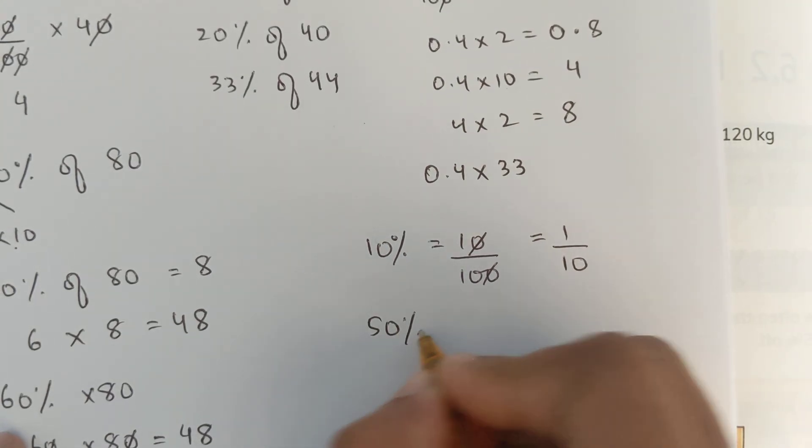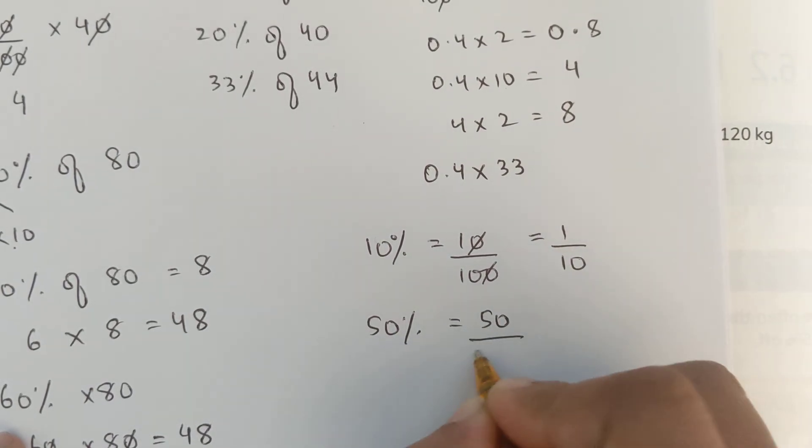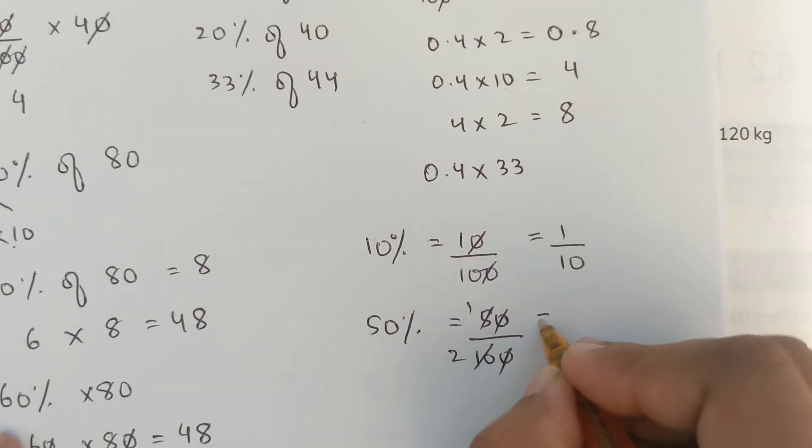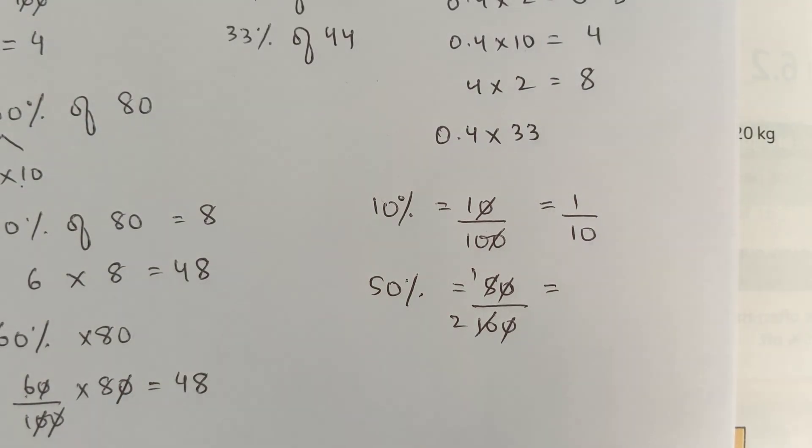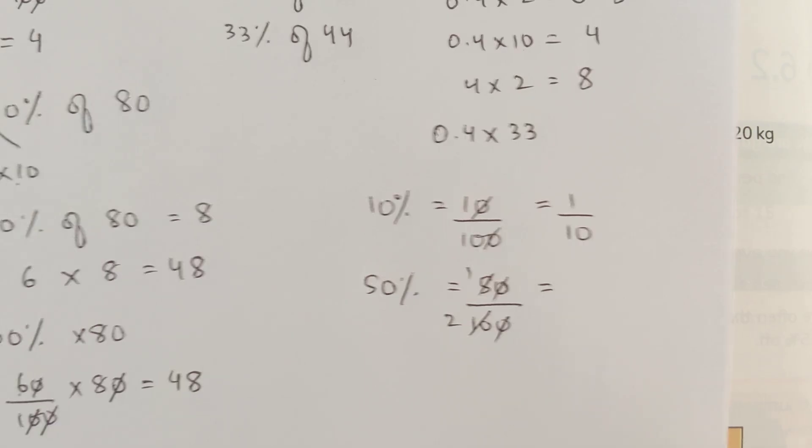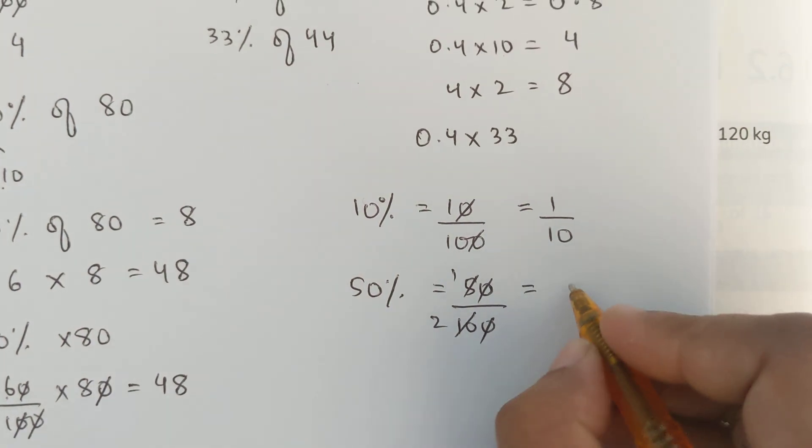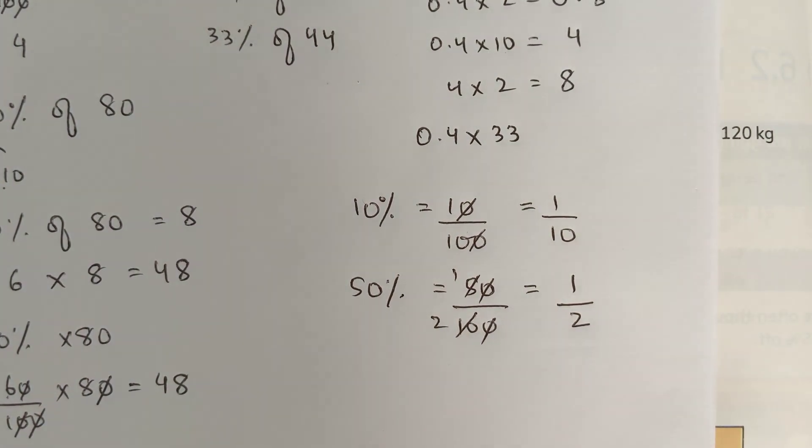Look, 10% means 10 over 100, which is equivalent to 1 over 10. That is why 1 over 10 is dividing something by 10. But, when we talk about 50%, so 50% is 50 over 100. 0 cuts 0. 5 ones are 5. 5 twos are 10. And, as the number suggests, 50%, when we talk about 50%, 50% means half of something because 100% is full. 100% is the complete of something. So, it is 1 over 2.